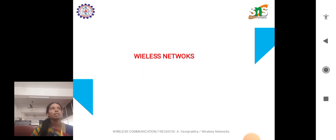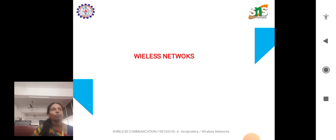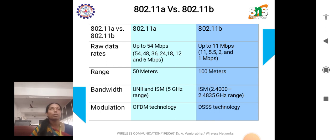IEEE 802.11 is a set of standards for wireless local area networking, commonly known as Wi-Fi. Over the years, several versions have been developed to improve performance, security, and functionality. There are versions like 802.11, 802.11a, 802.11b, 802.11g, 802.11n, 802.11ac, 802.11ax, and so on. Let us see the major comparison between these versions.